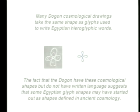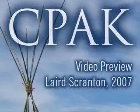Many of the Dogon shapes that are cosmological drawings also take the same shape as Egyptian hieroglyphs. When I finished writing the first book, I realized that the Dogon had provided me with 30 glyph shapes — 30 cosmological shapes that looked an awful lot like Egyptian shapes and in many cases carried the same meanings as the Egyptian shapes, or turned up written in Egyptian words that had the same meaning as the Dogon cosmological word.